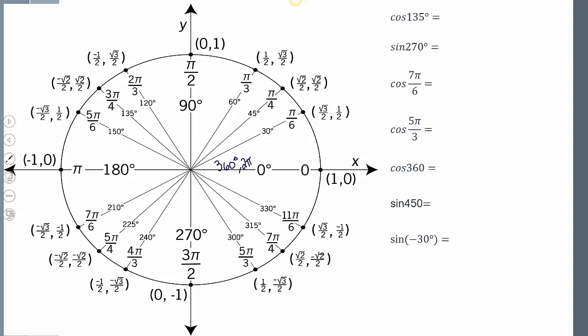Let's go over some ways to memorize this. First, the poles: we said we're moving over a distance of 1, moving up a distance of 1, moving to the left a distance of 1, moving down a distance of 1. So that's how we get (1, 0), (0, 1), (-1, 0), and (0, -1). We just have to examine the poles.